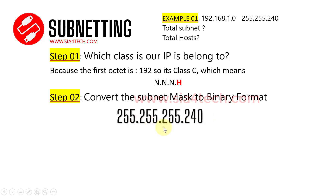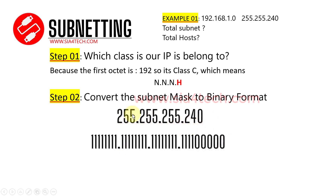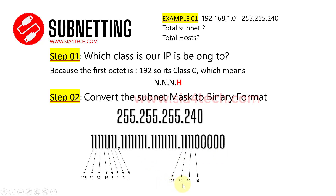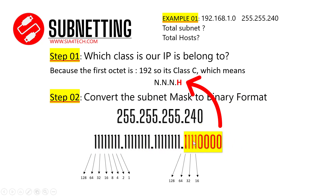The second step is to convert the subnet mask to binary. We have 255.255.240. For 255, all bits need to be on. For the last octet 240, four bits need to be on because 128 + 64 + 32 + 16 = 240. Our subnet mask is now ready to work on. Because we have Class C, we have one octet for the host, so our focus will be on the last octet, and the rest will be ignored.